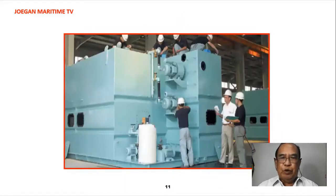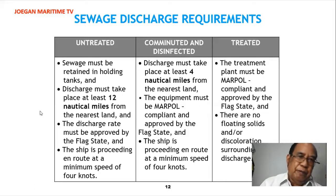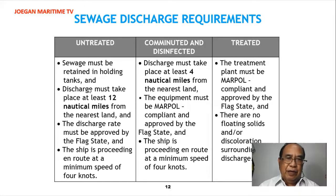These are examples of large sewage treatment plants. Sewage discharge requirements for untreated sewage: sewage must be retained in holding tanks, and discharge must take place at least 12 nautical miles from the nearest land. The discharge rate must be approved by the flag state, and the ship must be proceeding en route at a minimum speed of four knots.